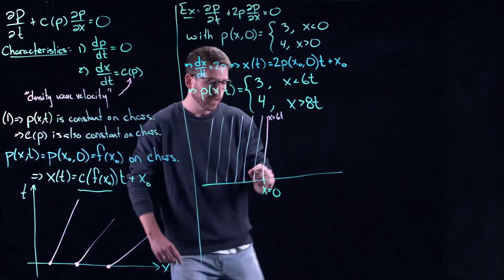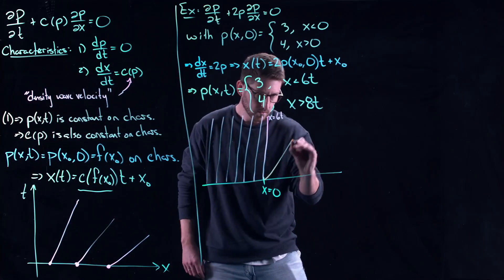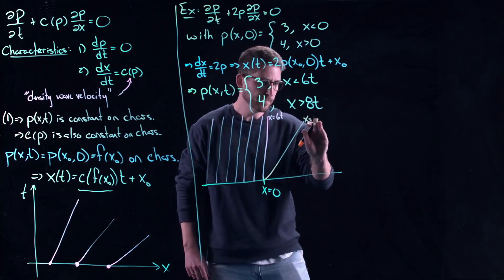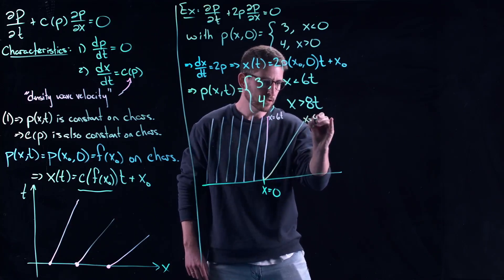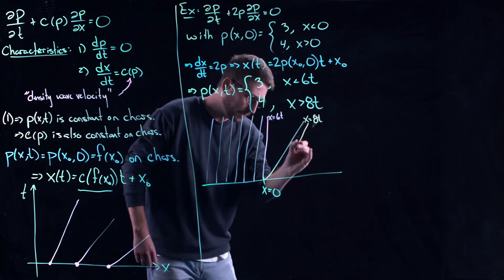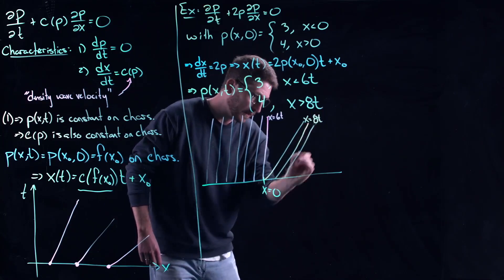Whereas out in front, we have x equal to 8t now due to the initial condition, the 4 here getting doubled up. And out in front, all the characteristics are parallel to it.